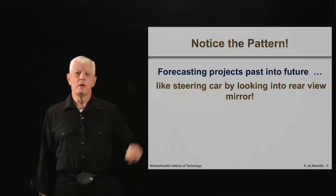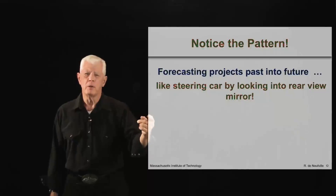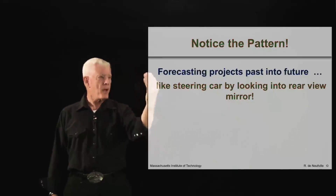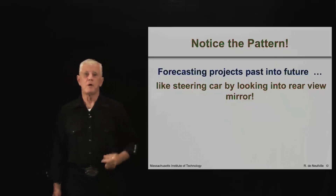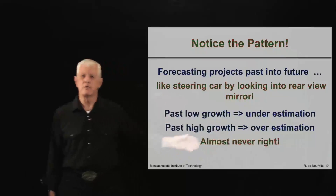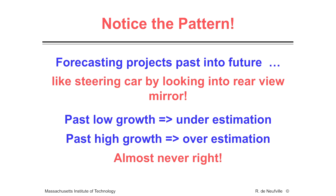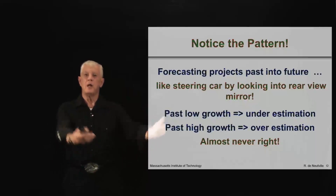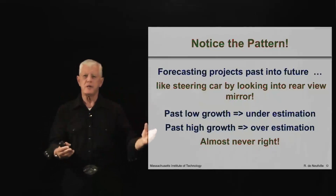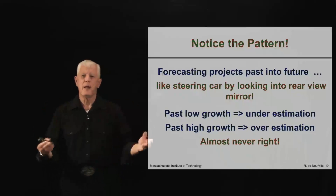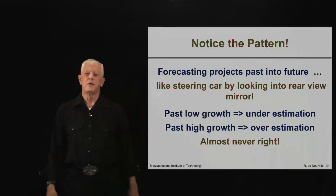So what's the pattern? Forecasting projects from the past, and the future is like steering a car by looking in the rear-view mirror. That's what you're doing — looking at the past and imagining the future. And what would happen to you if you drove a car like that? If it's low growth, you underestimate. If it's high growth, you overestimate. And in general, it's never right. If you actually drove by looking in the rear-view mirror, you'd run off the road. One of the issues is that just by the natural processes of what we have to do in forecasting — look to the past to somehow project the future — there is that tendency to run off the road, whether it is under-forecast in some situations, over-forecast in others, and never quite get it right. This is the common experience.